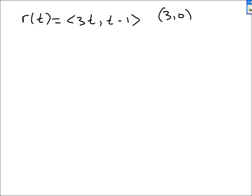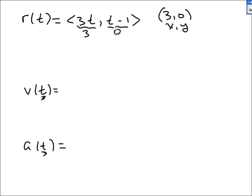Usually a and v are functions of t, so I need to plug in t values. The point (3, 0) is an x-y point. I need to find what t is. The x component 3t should equal 3, and the y component t minus 1 should equal 0. If t minus 1 is 0, then t is 1. And 3 times 1 is 3, which checks out. So t is 1. We want to find v of 1 and a of 1.